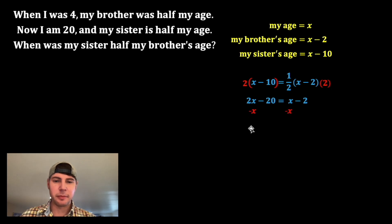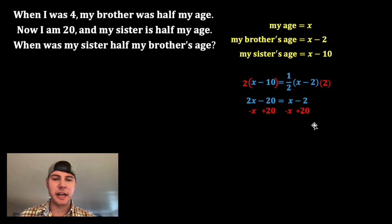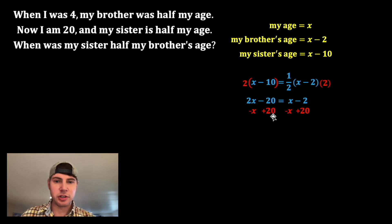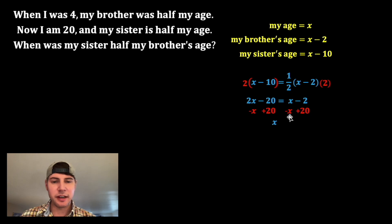Now I want to move this X over here, so I'm going to subtract X from both sides. And I want to move this 20 over here, so I'm going to add 20 to both sides. Negative 20 and positive 20 cancel each other out, and 2X minus X is one X. X and negative X cancel each other out, and negative two plus 20 is 18.